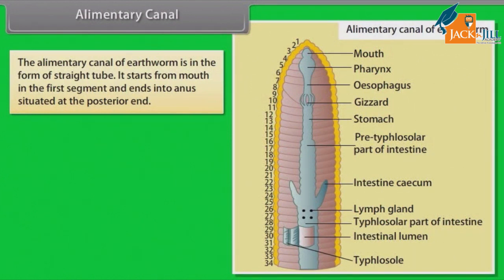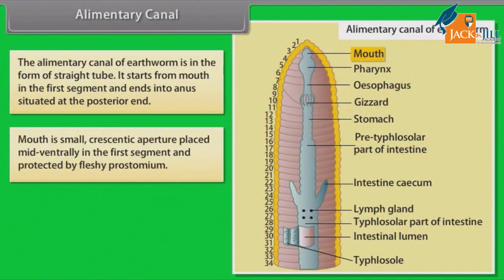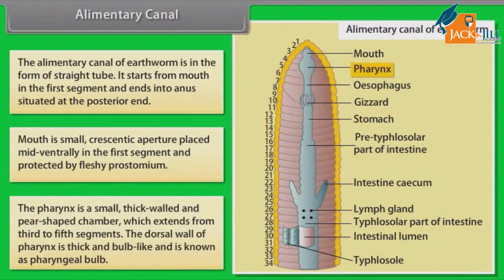The alimentary canal of earthworms is in the form of a straight tube. It starts from the mouth in the first segment and ends into the anus at the posterior end. The mouth is a small crescentic aperture placed mid-ventrally in the first segment and protected by the fleshy prostomium. The pharynx is a small, thick-walled, pear-shaped chamber extending from the third to the fifth segment. The dorsal wall of the pharynx is thick and bulb-like, known as the pharyngeal bulb.